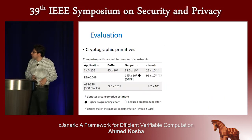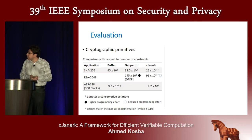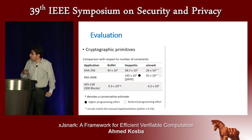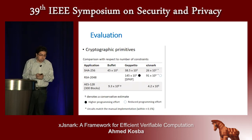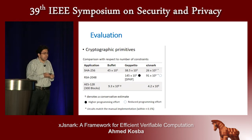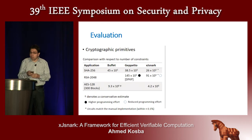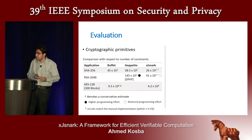For evaluation, we evaluated in multiple contexts. For cryptographic primitives, we compare with other compilers for SHA-256, RSA, and AES. For all of them, our circuits are more concise, and in some cases require less programming effort. For SHA-256 and RSA, our implementation matches the manual implementation. For AES, the version in the paper does not fully match, but our most recent posted version matches the manual implementation for AES as well.